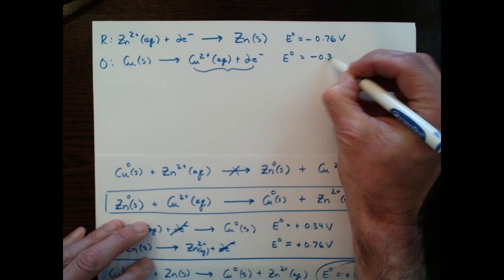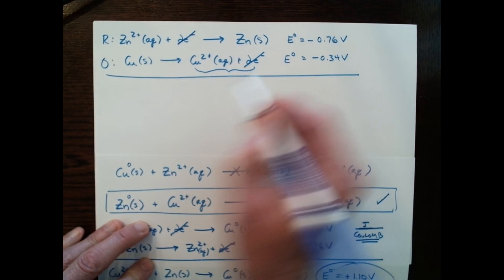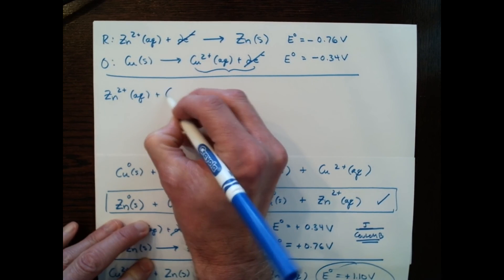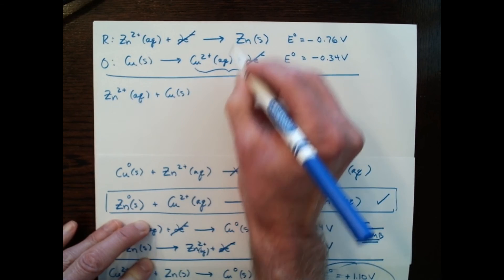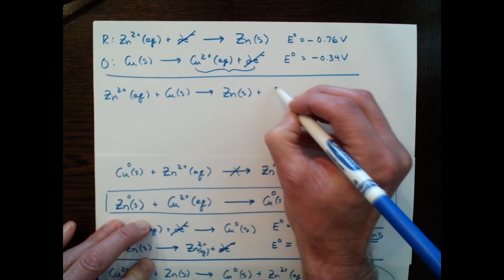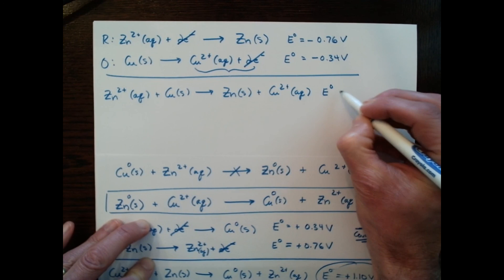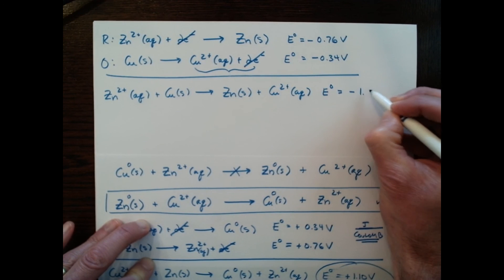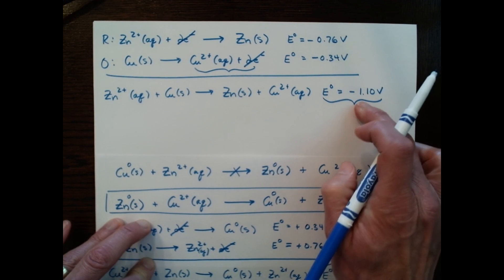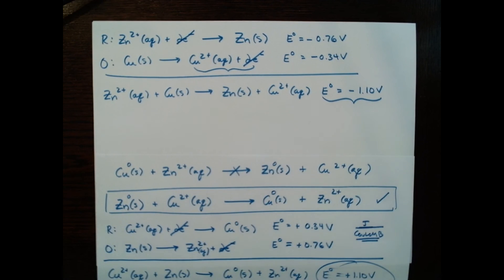Adding these together, the two electrons cancel and the overall reaction is Zn²⁺(aq) + Cu(s) → Zn(s) + Cu²⁺(aq). Adding the cell potentials: −0.76 + (−0.34) = −1.10 V. That negative cell potential tells me this reaction is non-spontaneous, which matches the experiment we just observed.